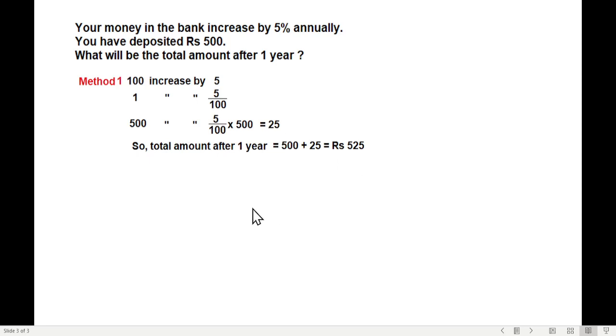Now there is another way which I think is a better way of doing this question. If we say that 100 becomes 105 after 1 year, 5% increase means it will become 105. So 1 will become 105 divided by 100, that is 1.05.